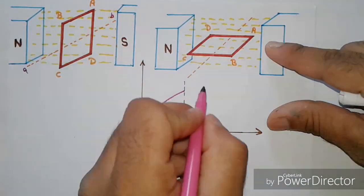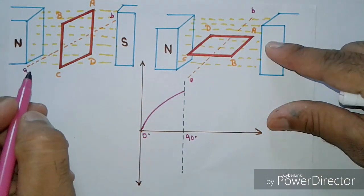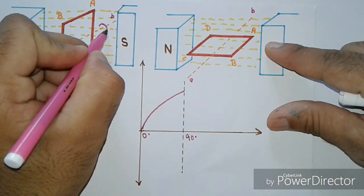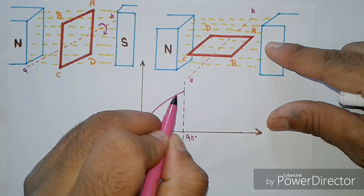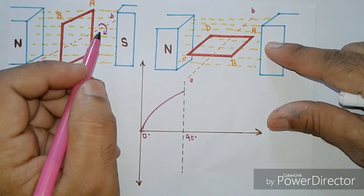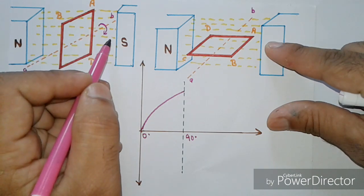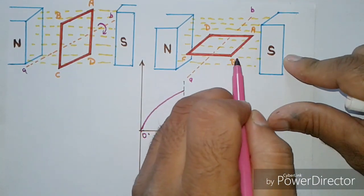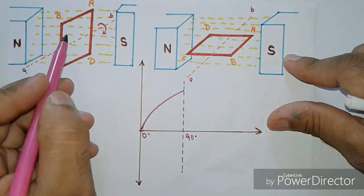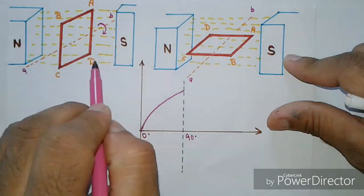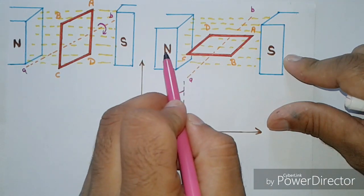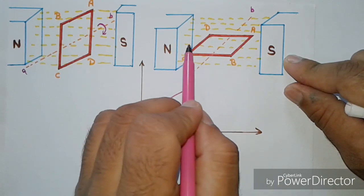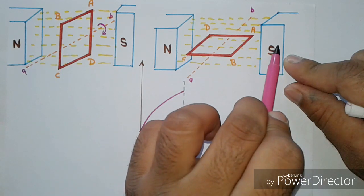Now if the rectangular coil rotates in a clockwise direction, after completing 90 degrees of rotation, conductor side AB comes in front of the south pole and CD comes in front of the north pole. The conductor's tangential motion is now perpendicular to the magnetic flux lines, from north to south pole.